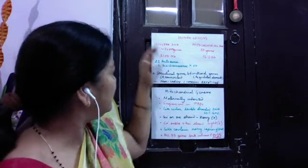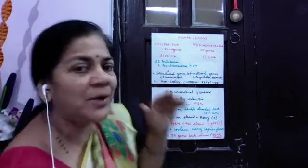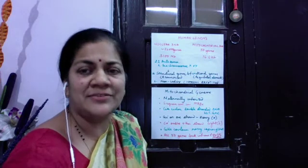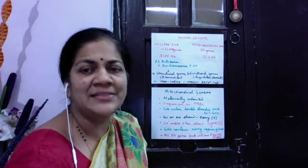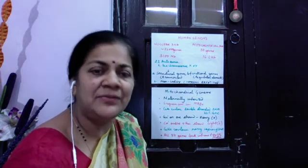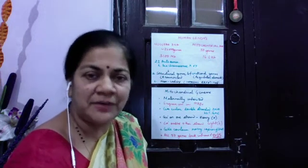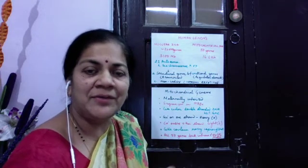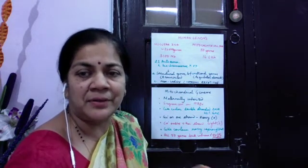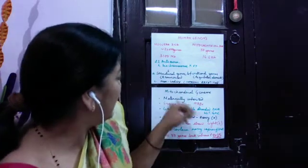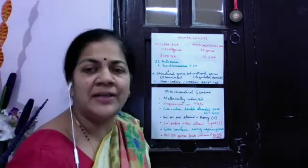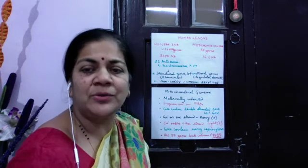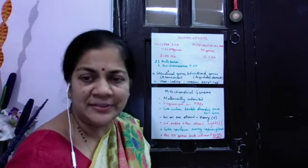The nuclear genome is divided into 22 autosomes and the two sex chromosomes X and Y. The DNA will have structural genes, functional genes, regulatory genes, non-coding genes, and repetitive genes. The mitochondrial DNA is maternally inherited and it was sequenced in the 1980s.